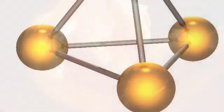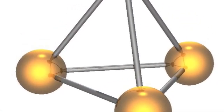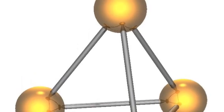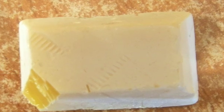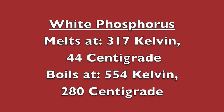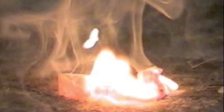White phosphorus is a waxy white solid. The allotrope is formed with four phosphorus atoms arranged in a tetrahedral formation. The formation is highly reactive and thermodynamically unstable, and gradually transforms to red phosphorus with exposure to heat and light. White phosphorus melts at 317 kelvin or 44 degrees celsius and boils at 554 kelvin or 280 degrees celsius. White phosphorus is extremely flammable and self-ignites at about 30 degrees celsius on contact with air, and as such it is usually kept underwater.